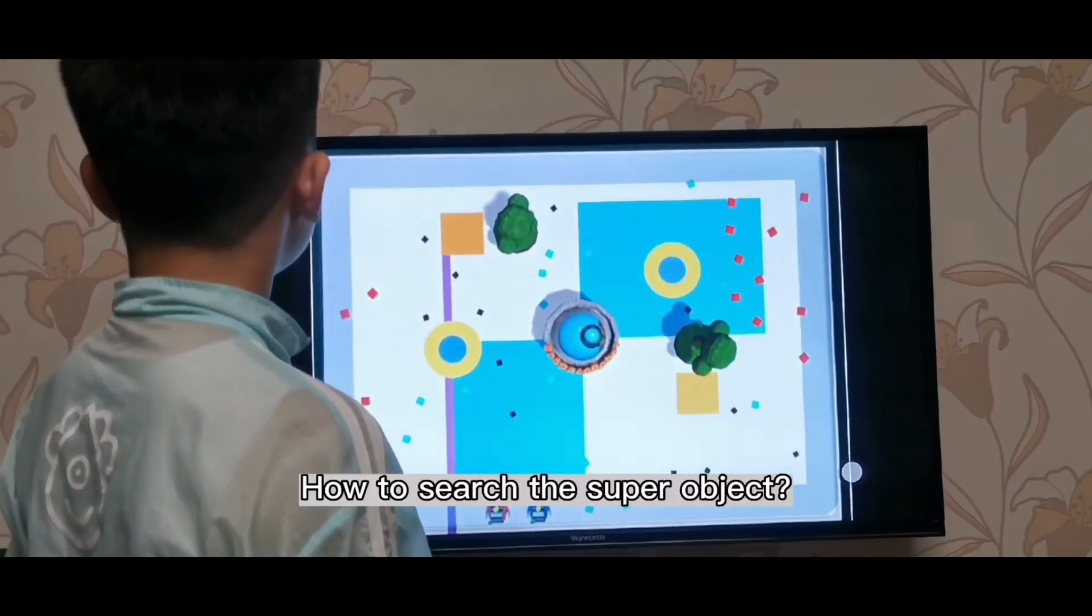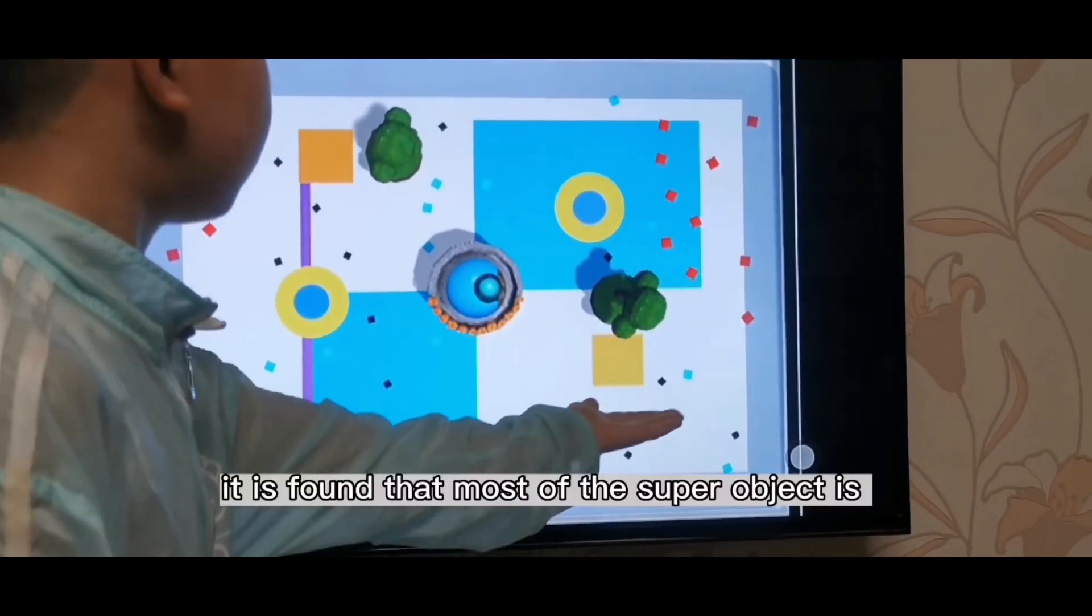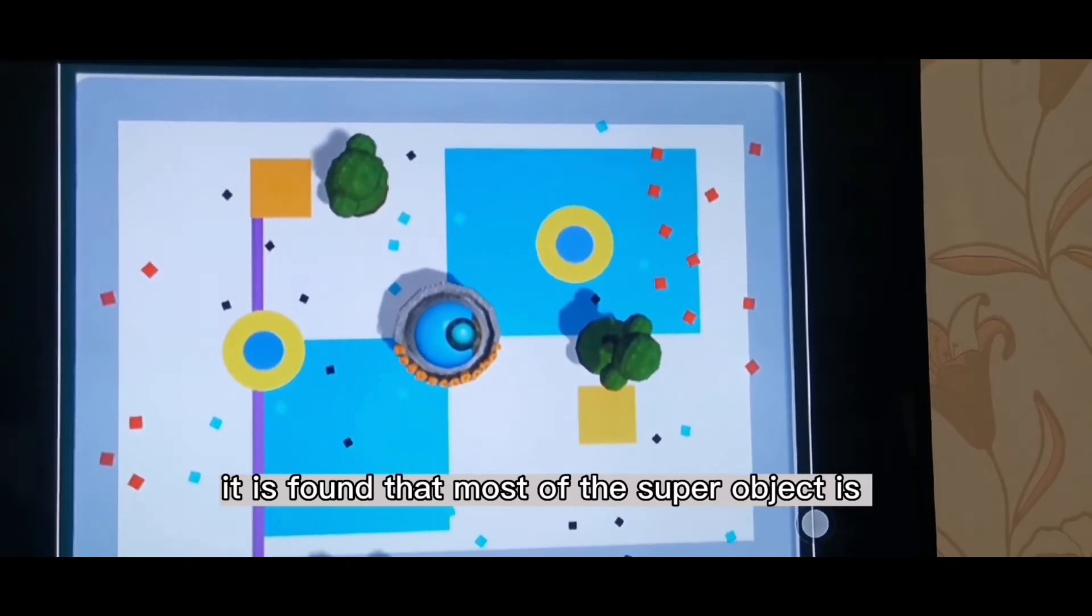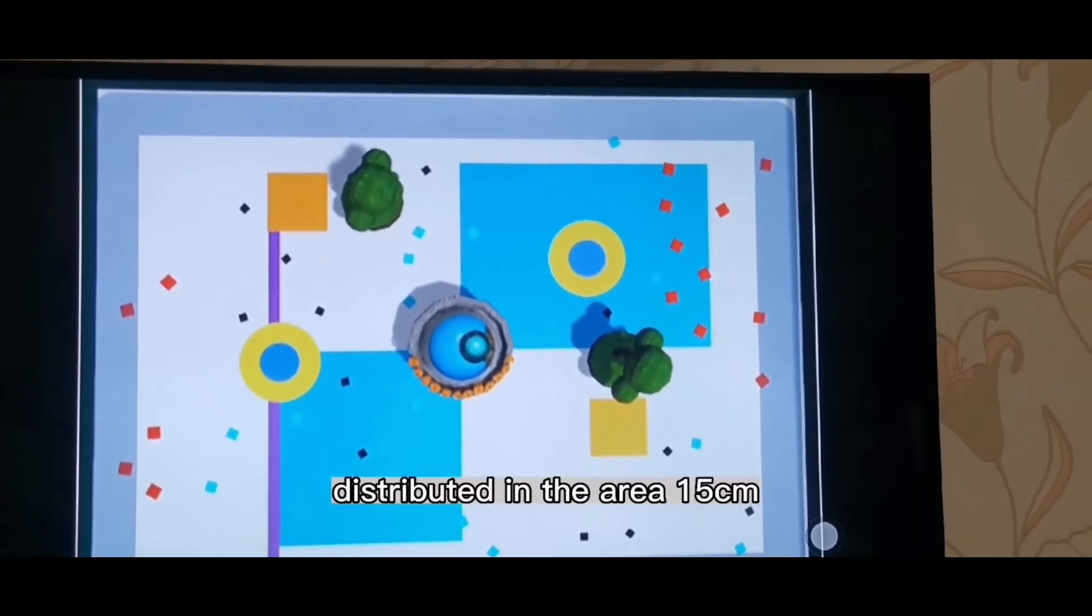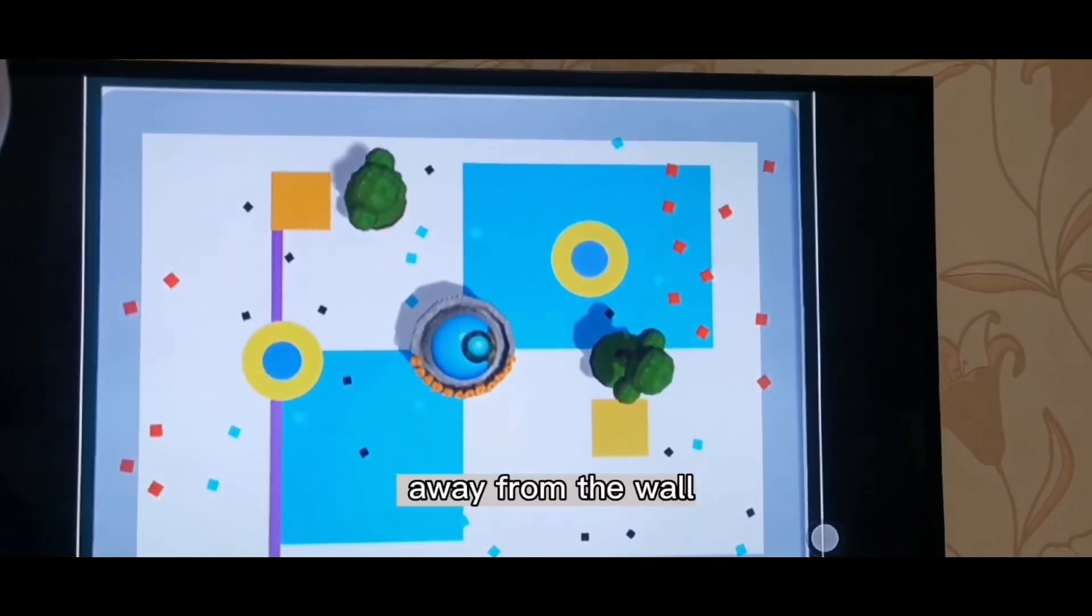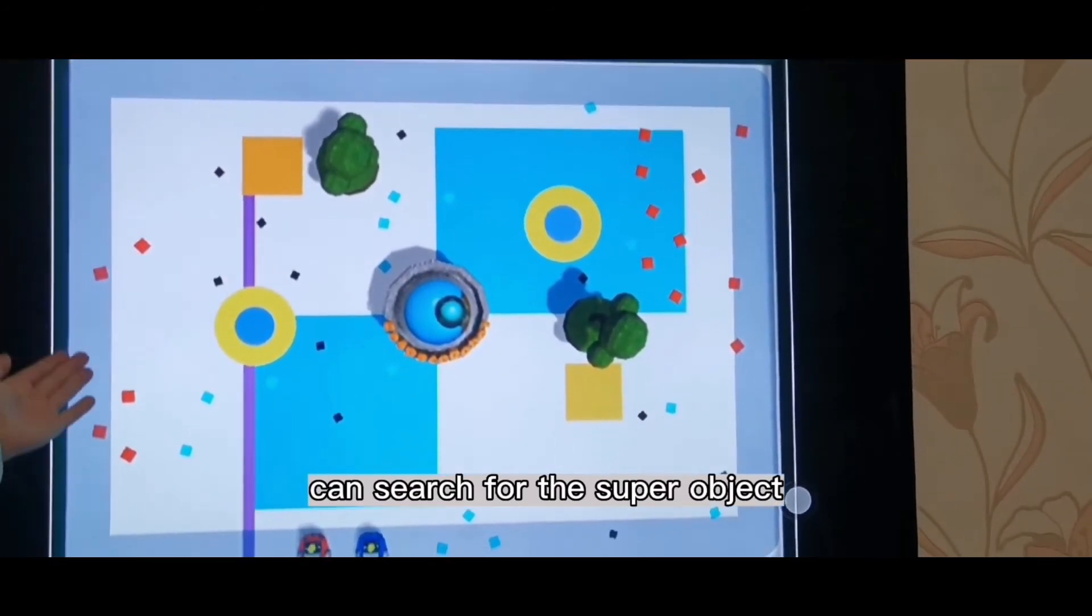How to search for the super object? Through the experiment, it is found that most of the super objects are distributed in the area 15 cm away from the wall. So, using the wall strategy, you can search for the super object.